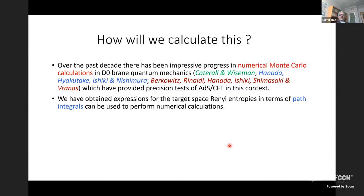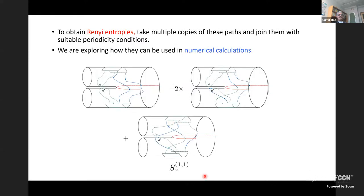The best bet for an accurate calculation of this target space entanglement entropy is numerical calculations. Over the past decade there has been impressive progress in numerical Monte Carlo calculations for D0-brane quantum mechanics, providing precision tests of the AdS/CFT correspondence. Motivated by this, we have obtained expressions for the target space Rényi entropies in terms of path integrals which can be used to perform numerical calculations. These path integrals are complicated but very concrete and can be put on a computer; we are currently exploring how they can be used.